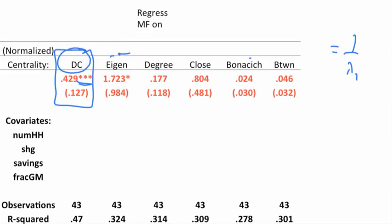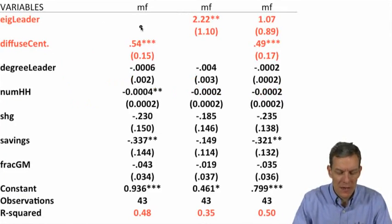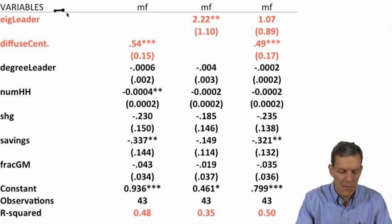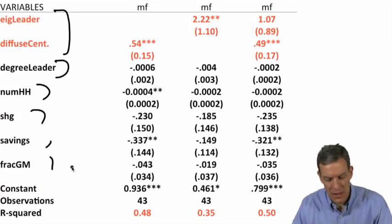And the other horse that seemed to be running pretty well was eigenvector centrality. So we can say, well, it's hard to compare coefficients because a larger coefficient just indicates that the units are different. And so if we renormalize things, we could make either coefficient larger or smaller. So in order to figure out which one might be doing a better explanation, we can sort of put them together in the same regressions where we keep track of things like the degree of the leaders, the number of households, self-help group participation, savings, fraction in the caste, and so forth.